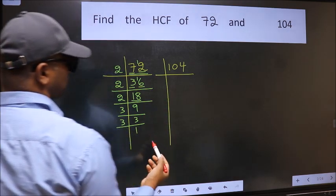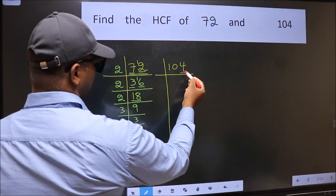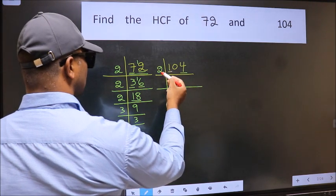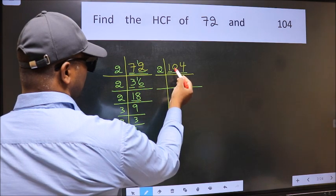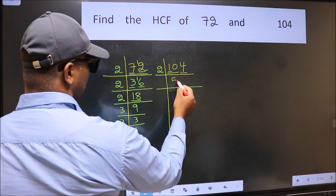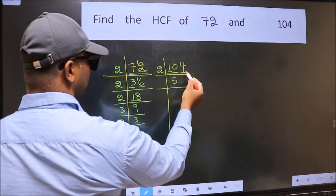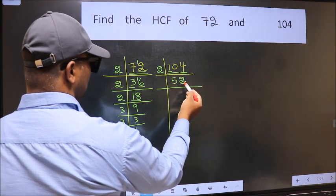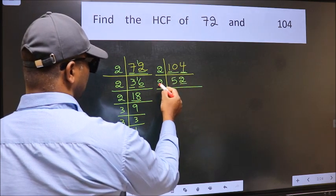Now the other number, last digit 4 even, so take 2. First number 1, smaller than 2, so take 10. When do we get 10 in 2 table? 2 times 5 equals 10. The other number 4. When do we get 4 in 2 table? 2 times 2 equals 4.